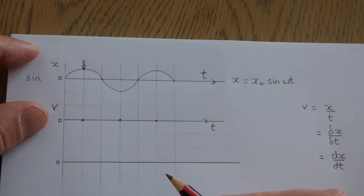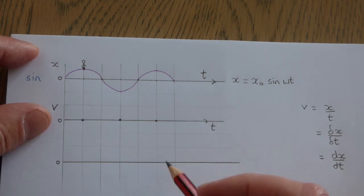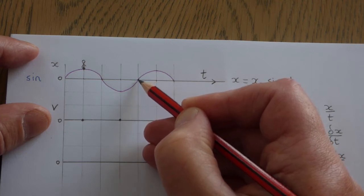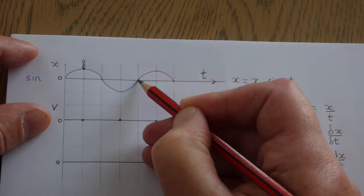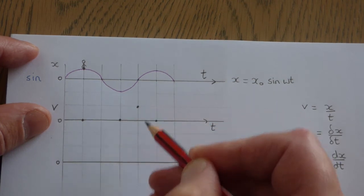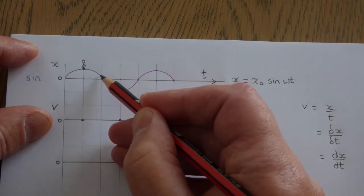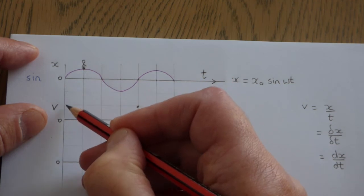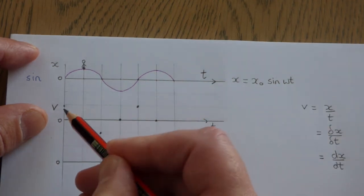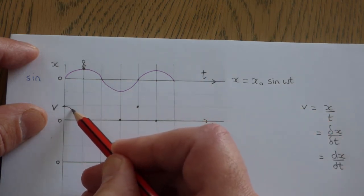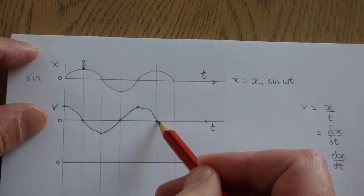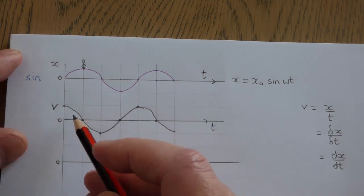Next, we look for where the gradient is at a maximum and positive. Starting from the zero crossing, the curve gets steeper and steeper, reaches a maximum steepness, then gets less steep. At that point there is a maximum positive gradient, so we plot a maximum positive velocity. There is also a maximum gradient where the graph goes negative, so we plot a maximum negative value. Connecting these points gives a graph that goes maximum, down to zero, maximum, and so on.